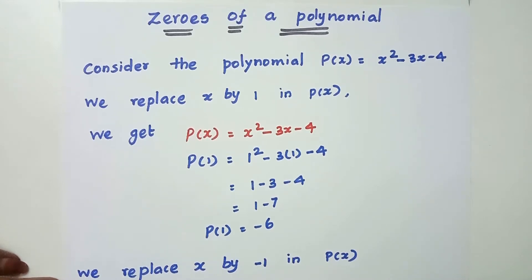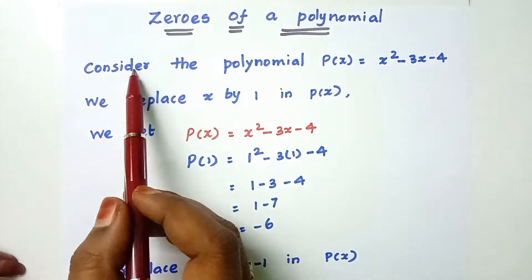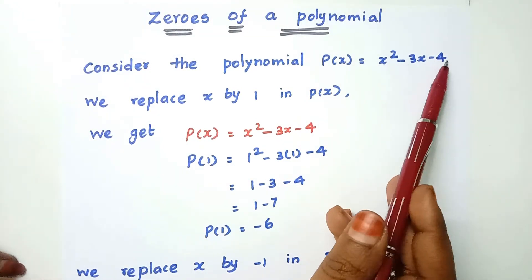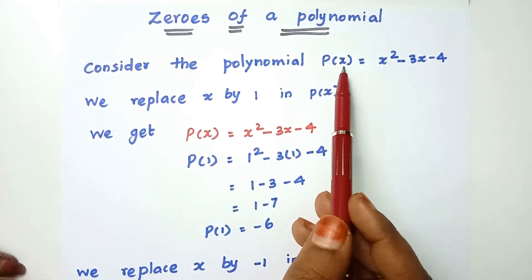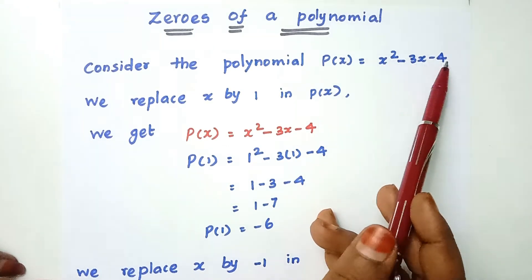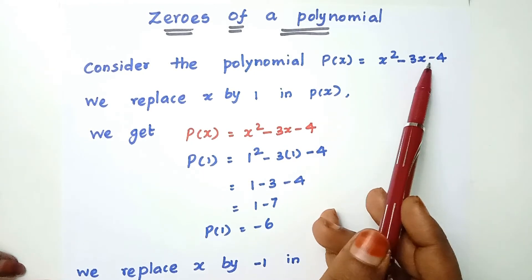Now, we can write any polynomial. That is x³ — it is one variable — that is a linear or quadratic polynomial. Consider the polynomial p of x equal to x² minus 3x minus 4. This is a polynomial in one variable, that means a polynomial in x. This is degree 2, that means a quadratic polynomial.